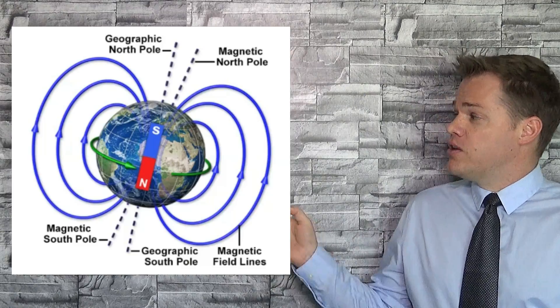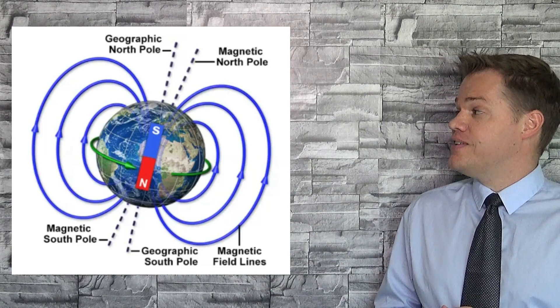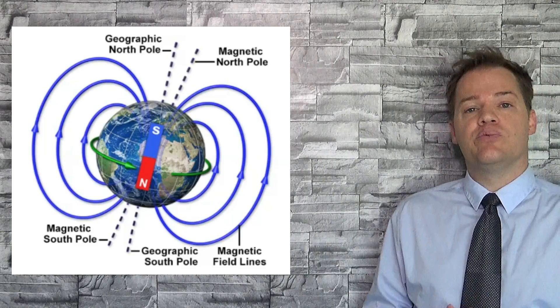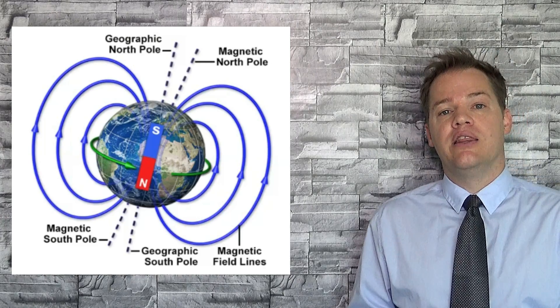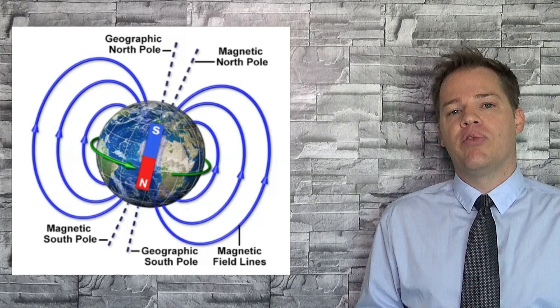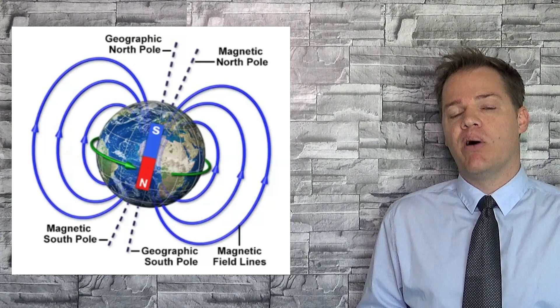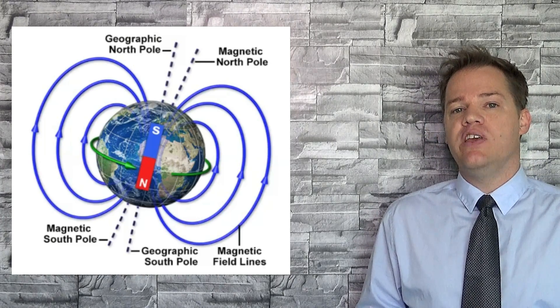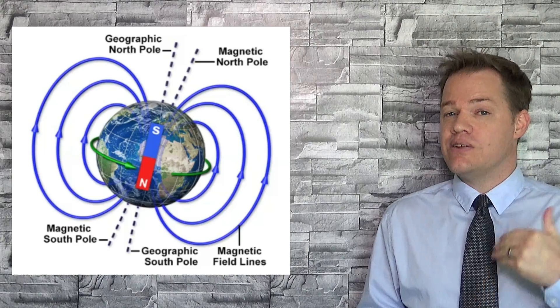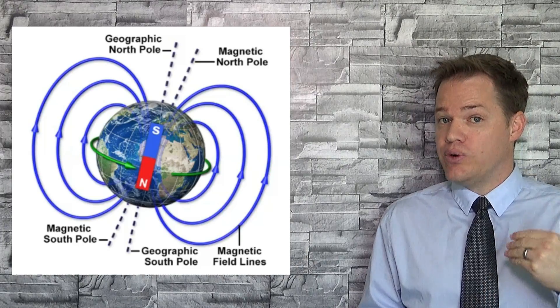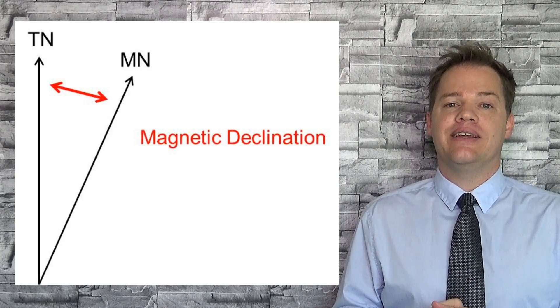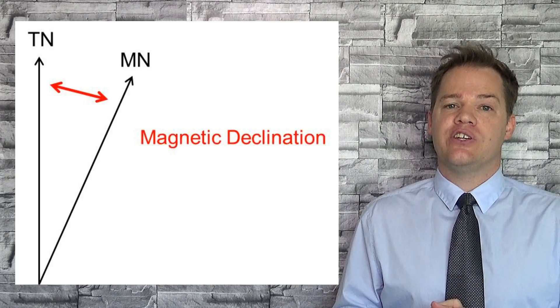On this picture you will see that there is a difference between the magnetic North Pole and the geographic North Pole of the earth. So it's important to remember these things, and this difference between True North and Magnetic North is called Magnetic Declination.